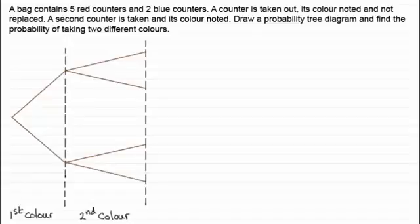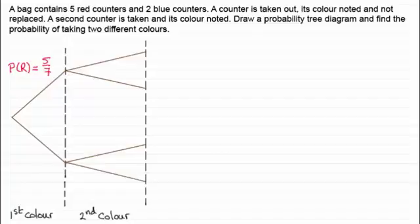For taking out the first colour, we've got two outcomes — you can either take a red or a blue. If you take out a red counter, the probability of taking out a red is going to be five out of a total of seven counters. And similarly, if you took a blue, that probability would be two out of seven. Now this is where it's going to change.